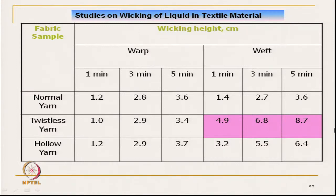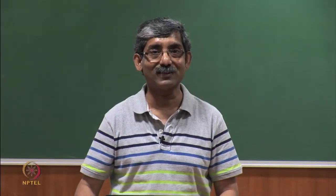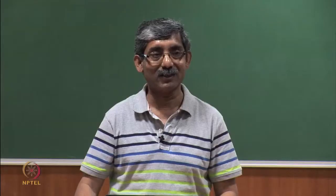If we increase twist, the capillary path will be a helix path and fluid flow will be reduced. This shows that in twist-less yarn, the capillaries are straight, so the rate and height of wicking are very high. Similarly, absorbency is high when pore volumes are high.